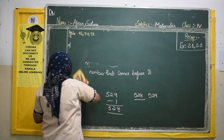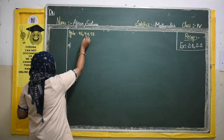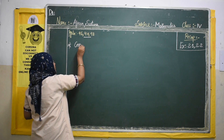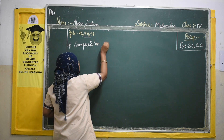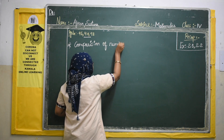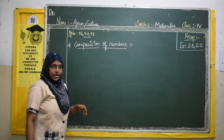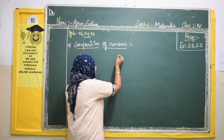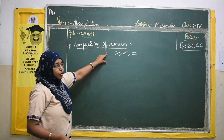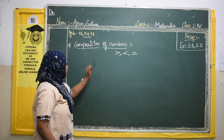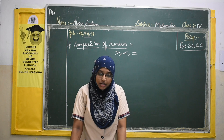Our next topic is comparison of numbers. Please turn to page number 97. Comparison of numbers involves greater than, less than, and equal to. We will do this with large numbers. Now what is the easiest way? They may give us numbers with a different number of digits.